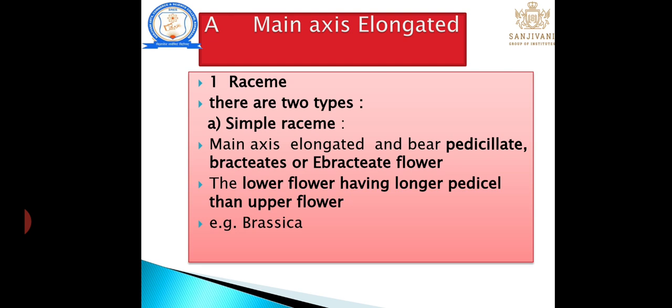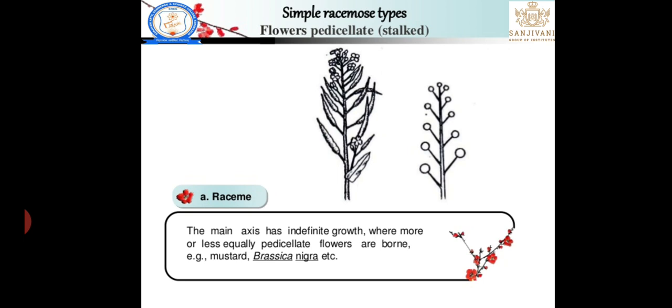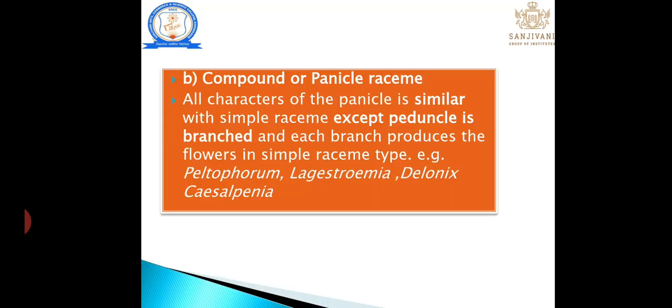Simple raceme: it is a pedicellate, bracteate inflorescence with acropetal succession. The lower flowers have longer pedicels than the upper flowers. We mention only the special character that differentiates it from others — the lower flower having a longer pedicel than the upper flower. For example: Brassica and Silvia.